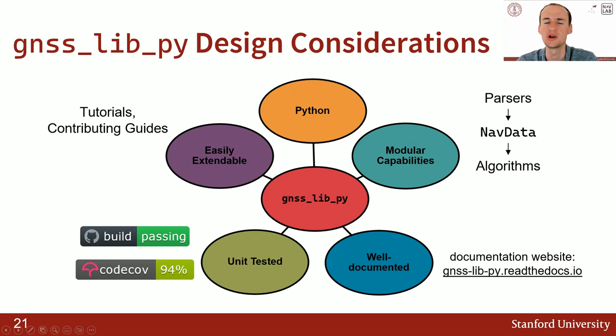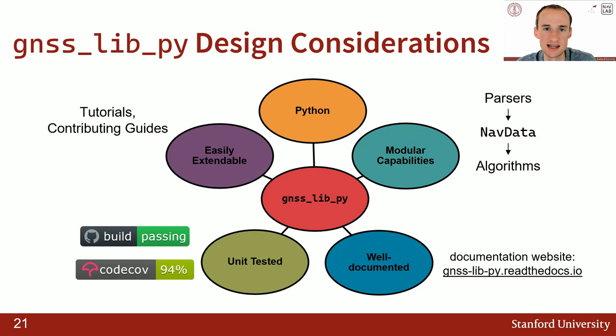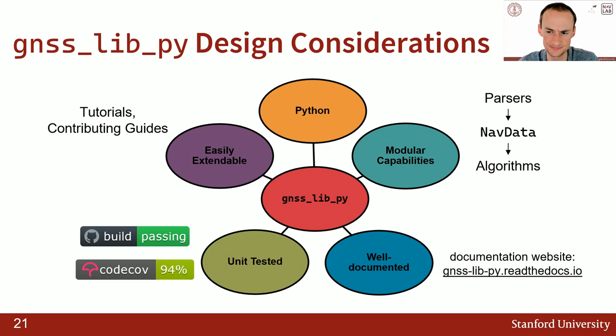In conclusion, we created this Python library that is modular — you can easily switch out what type of data source you're coming from and what algorithm you're using. It's well documented, with tutorials and reference documentation all on our dedicated documentation website. It's unit tested so you can have confidence that the code works as expected and will continue to work as new code is added. And it's easily extendable — we have documentation guides on how to extend our library by adding additional data sources or algorithms.